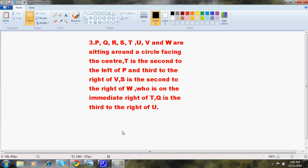P, Q, R, S, T, U, V and W are sitting around a circle facing the center. T is the second to the left of P and third to the right of V. S is the second to the right of W, who is on the immediate right of T. Q is the third to the right of U. Honestly a question like this is tough.